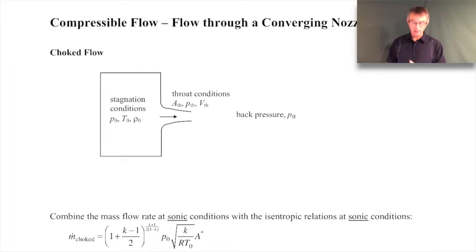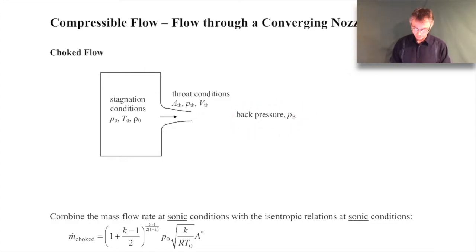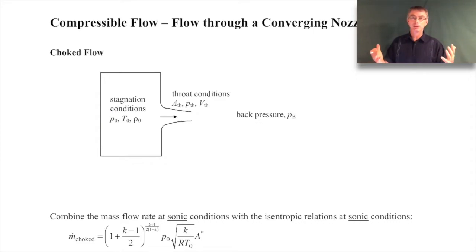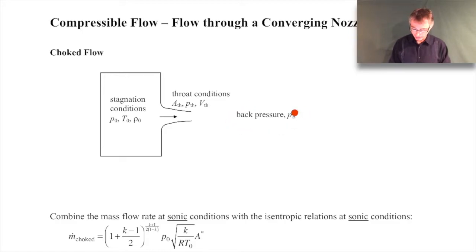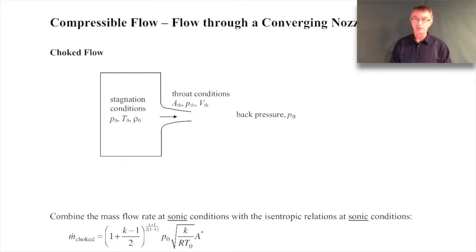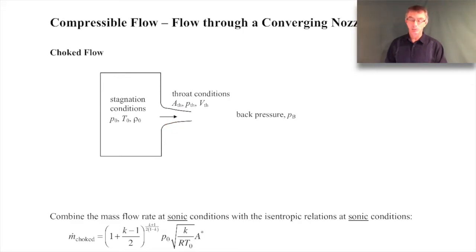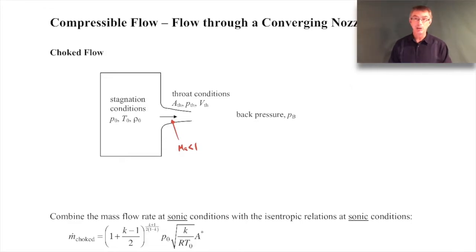Let me physically describe the whole process. We start with the back pressure — the pressure we're discharging into — equal to the stagnation pressure. Nothing happens because there's no pressure difference to push flow through the nozzle. Now drop the back pressure a little bit: that pressure difference pushes air through. The flow goes from stagnation conditions through the converging nozzle, so velocity increases and Mach number increases, but it's subsonic because we haven't gone through a minimum area yet.